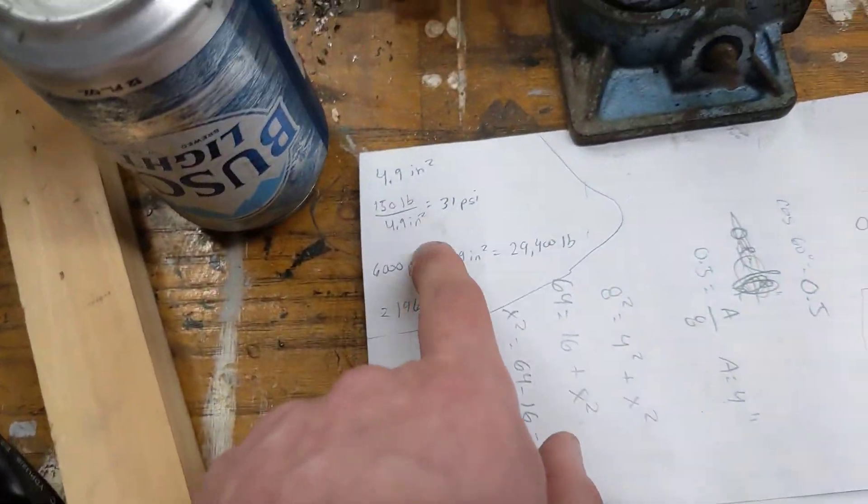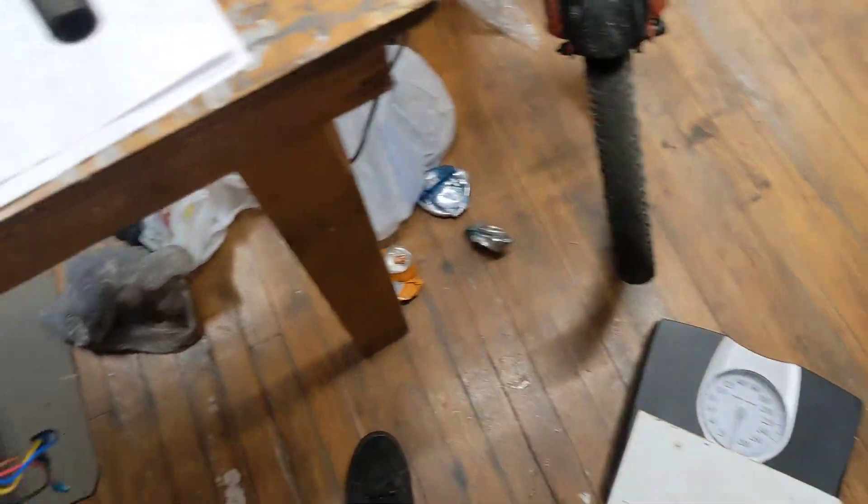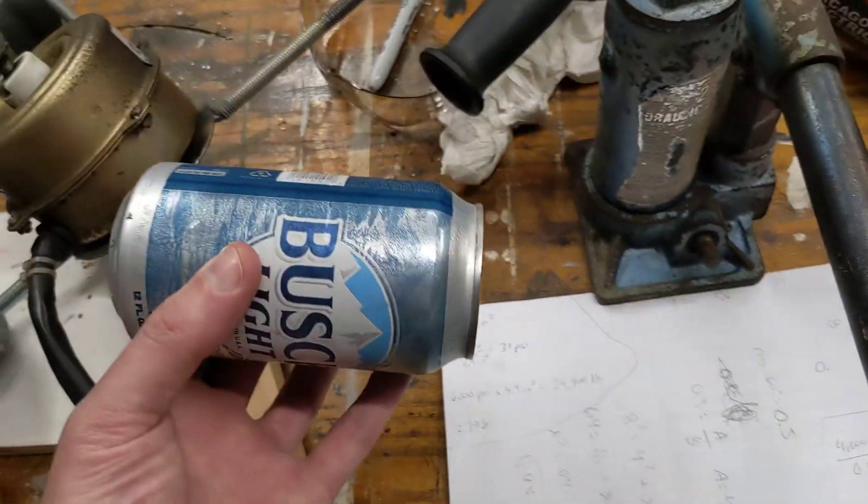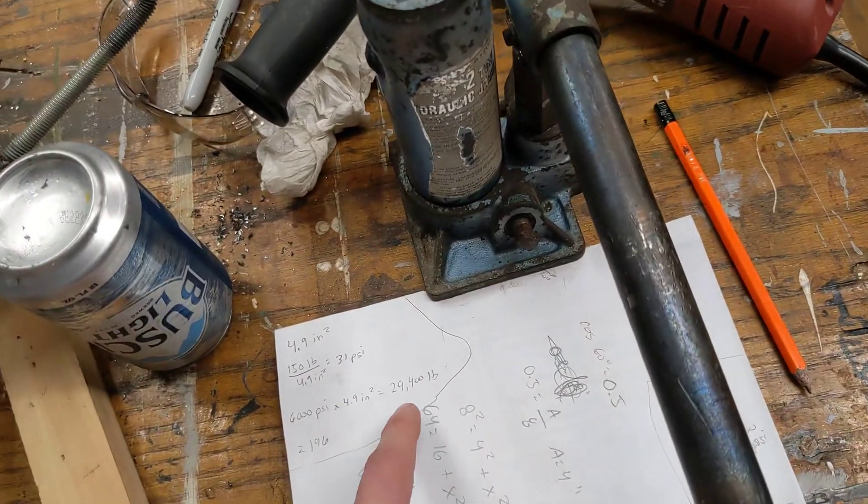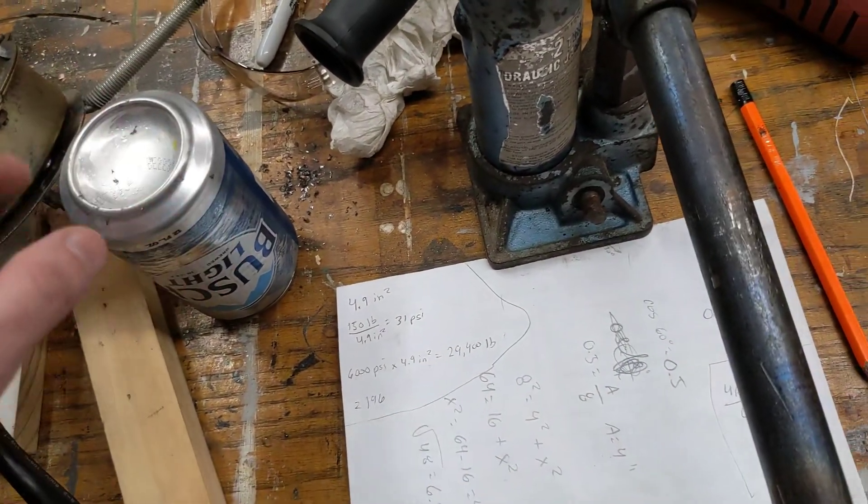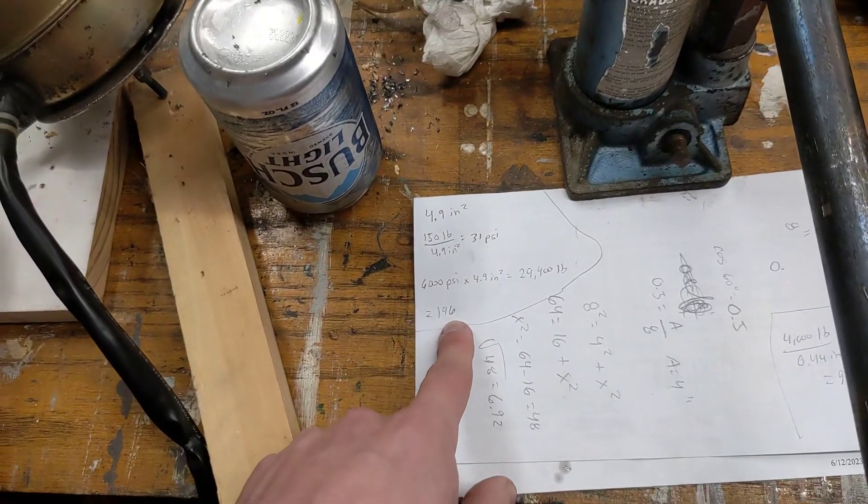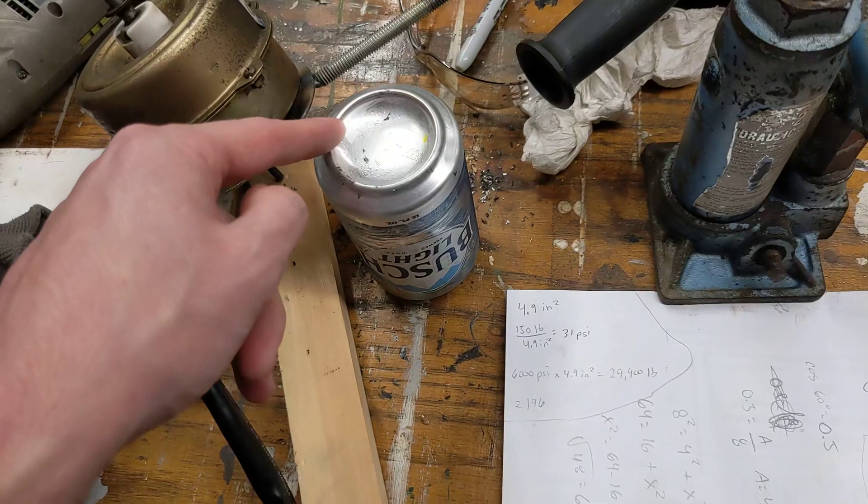So, I crushed the cans here with my body weight. You saw how fast they crushed. Now, if this can was experiencing a pressure of 29,400 pounds of force on this end, that's like my body weight times 196 stacked on top of this can.